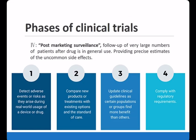The Phase 4 clinical trial, also named post-marketing surveillance, follows up a very large number of patients after the drug enters general use, providing precise estimates of uncommon side effects. There are four major aims: first, to detect adverse events or risks arising during real-world use; second, to compare the new product with existing treatment options; third, to update clinical guidelines as certain populations may benefit more; and fourth, to comply with regulatory requirements for the drug.